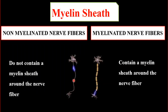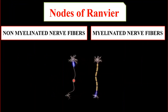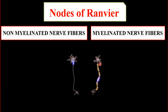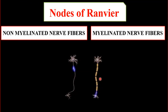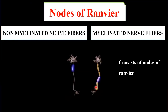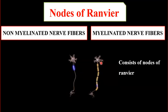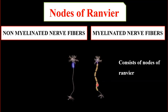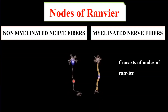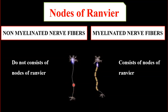The myelin sheath also provides gaps between segments; these gaps are known as the nodes of Ranvier. So myelinated nerve fibers consist of nodes of Ranvier because they are surrounded by the myelin sheath, while non-myelinated nerve fibers are not surrounded by myelin and therefore do not contain nodes of Ranvier.